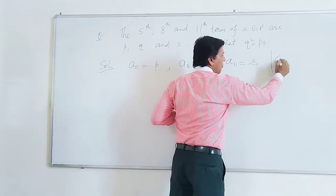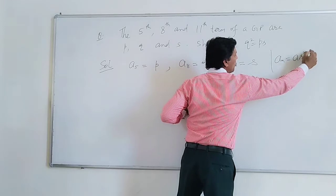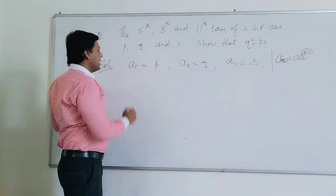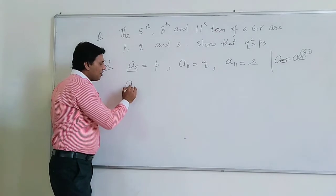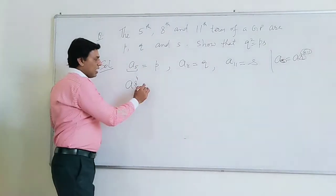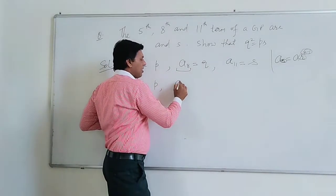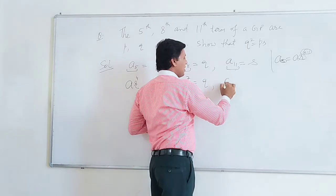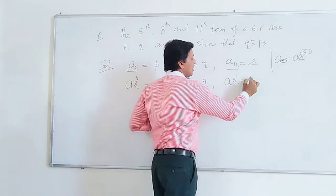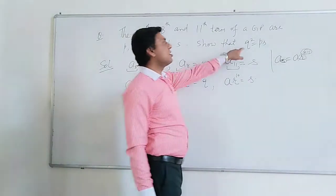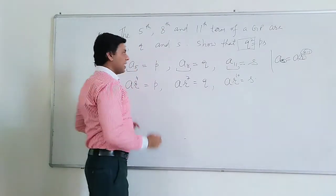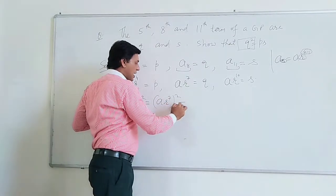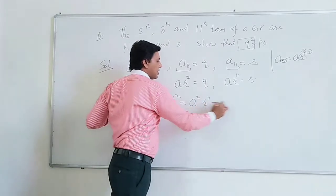Now we know the nth term formula for GP: An is equal to A times R to the power (N−1). So A5 equals A·R to the power 4, and it is given as P. Similarly, A8 equals A·R to the power 7, which is Q. And A11 equals A·R to the power 10, which is equal to S. To establish the relation, we find Q squared: squaring A·R⁷ gives A²·R¹⁴ — this is condition 1.